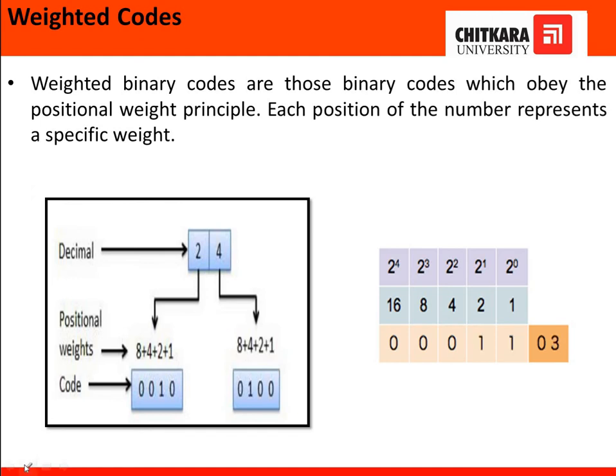Next is the weighted code. Now, the weighted codes itself explains that it obey the positional weight principle, means it deals with a specific positional weight, that is the 8421 in this case. They are known as 8421 codes also. If you see this, there are specific weights given here, 2 raise the power 0, 2 raise the power 1, 2, and many more, which is represented by this 8421. Then, 16, if you further modify or just explaining it, it gives 2 raise the power 5, that is 32 and 64 and many more.